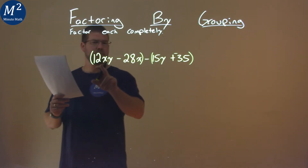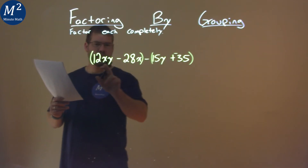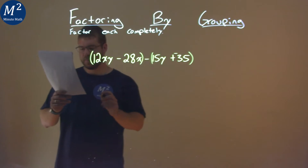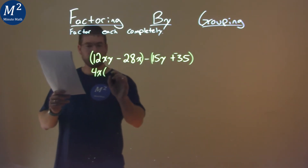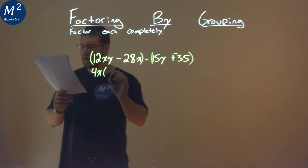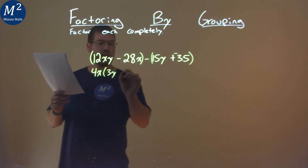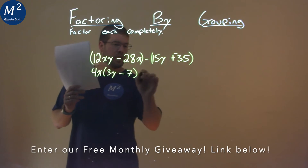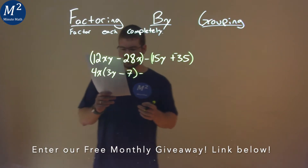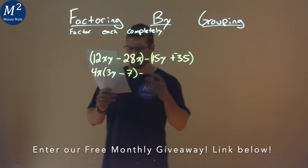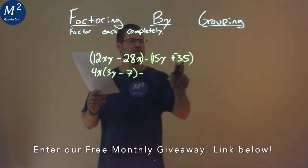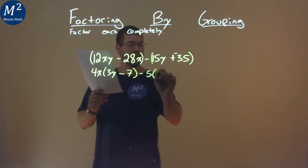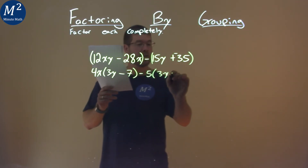Let's look at the first two terms. An x is in both of them, and 4 can come out of both of them as well. So if I pull out a 4x, what am I left with? 4x out of 12xy is 3y, and 4x out of 28x is just a 7. Now we do the same thing with the second set of two terms. A 5 goes into both parts here, so by pulling out a 5, I'm left with a 3y minus 7.